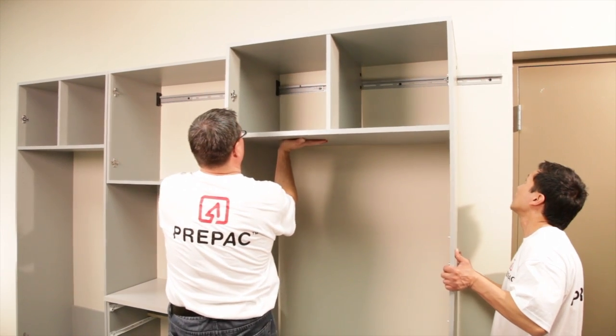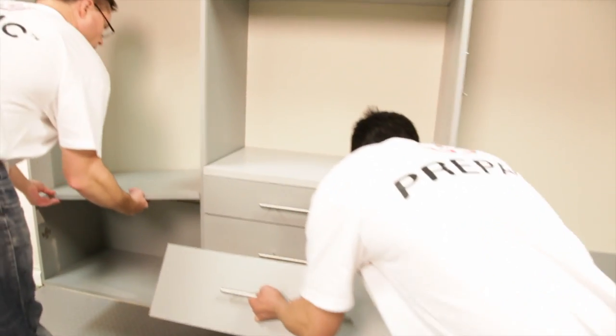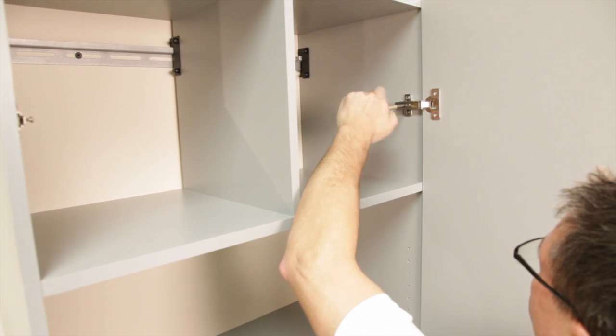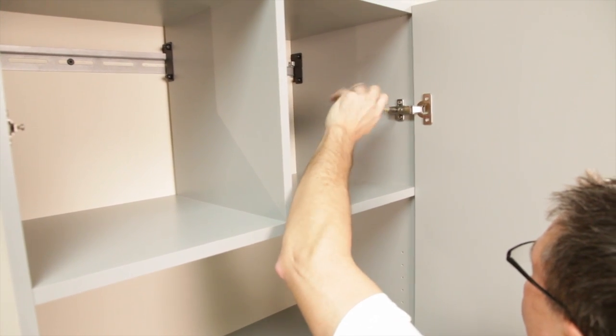Hang the remaining cabinets, then insert drawers, shelves and attach doors. Door hinges can be adjusted six ways.